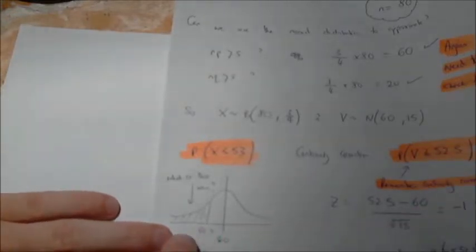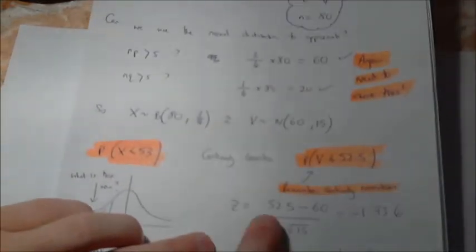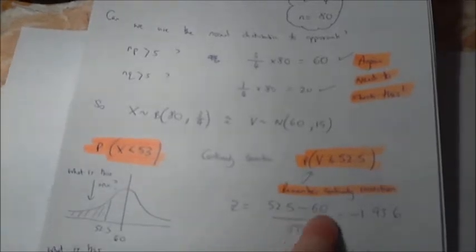So my next stage is, okay, 52.5. I need to standardize this to use the table in the back of the book. So here I have put Z equals 52.5, my value, minus my mean here, which is 60, divided by, of course, our standard deviation, which is the square root of 15.